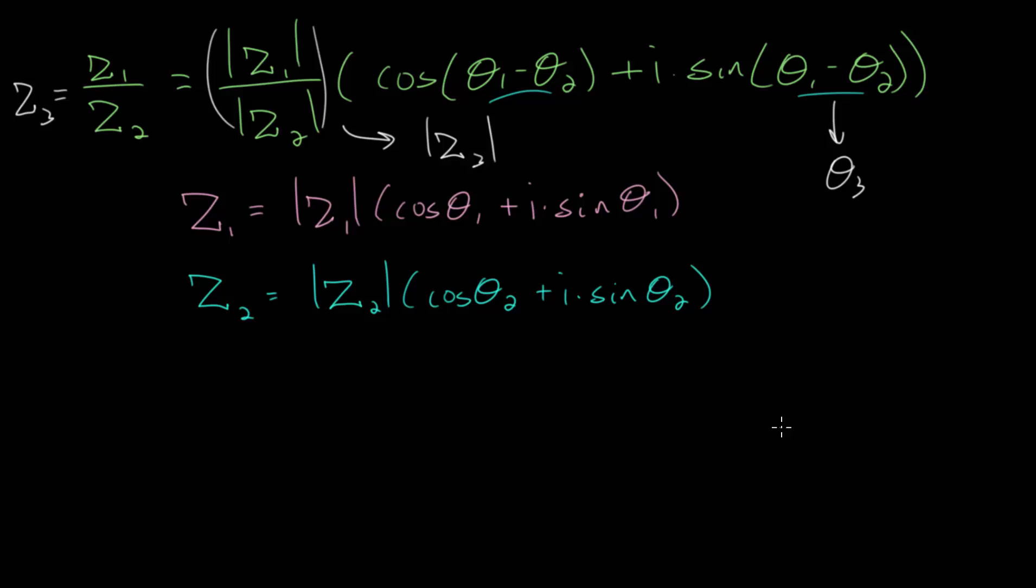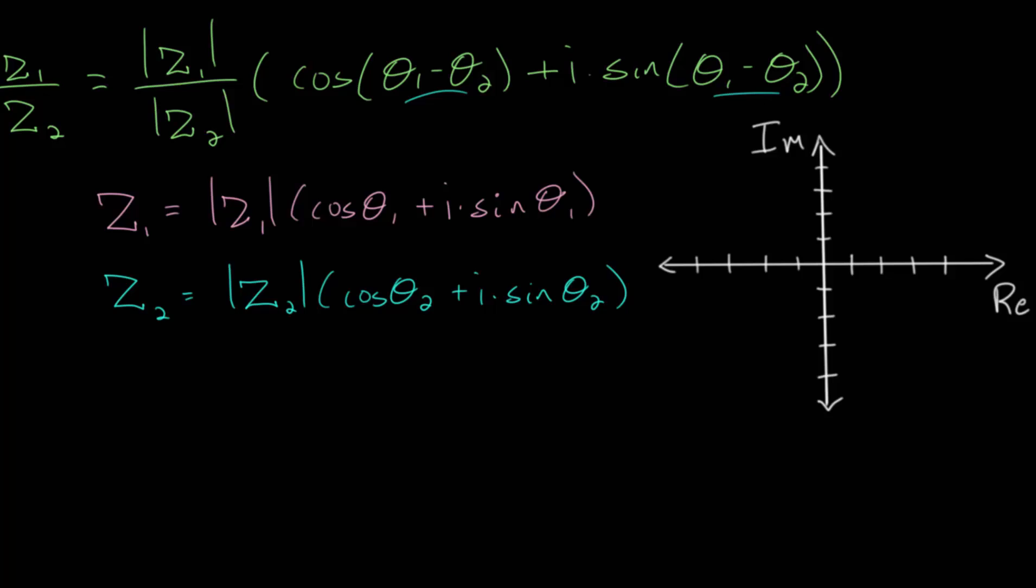For this video, I'd like to look at a specific example problem so we can better understand this formula. Let me make a little bit of room, and we will come up with an example problem to help make sense of this formula. Let's say we have a complex number z1, which is equal to 4 multiplied by the cosine of 120 degrees plus i times the sine of 120 degrees. And let's say that z2 is 2 multiplied by the cosine of 90 plus i times the sine of 90 degrees.